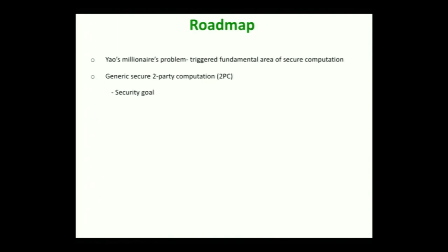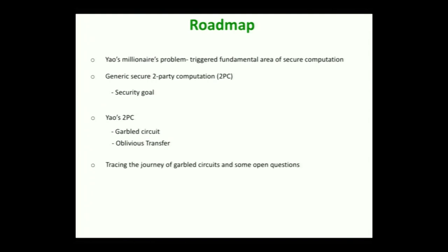We will briefly see the security goal, though you probably would have already seen a detailed discussion on the security definition in Manoj's talk. Once we are done with the security goal, we will discuss Yao's proposal for the two-party computation protocol, which is based on garbled circuits and oblivious transfer. In this talk we will elaborate on garbled circuits and take oblivious transfer as a black box. In my next lecture tomorrow we will talk in detail about oblivious transfer, and in the end we will trace the journey of garbled circuits and conclude with some interesting open questions.